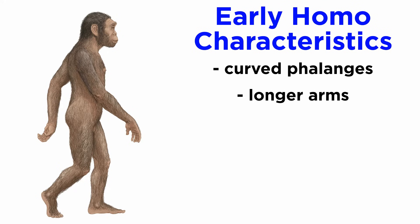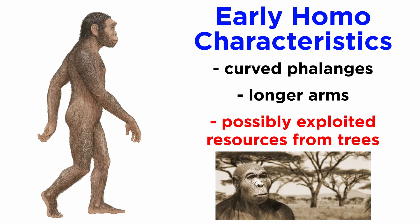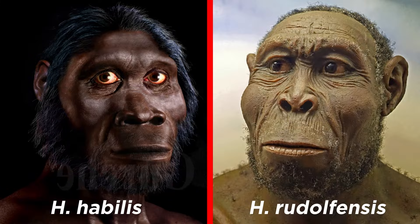These members of early Homo are thought to still possess some primitive characteristics in their post-crania: curved phalanges and longer arms. This may suggest that in addition to meat, early Homo was still exploiting resources from the trees. Overall, Homo habilis and Homo rudolfensis have a mix of basal and derived characteristics, but they appear far more human than anything that came before.